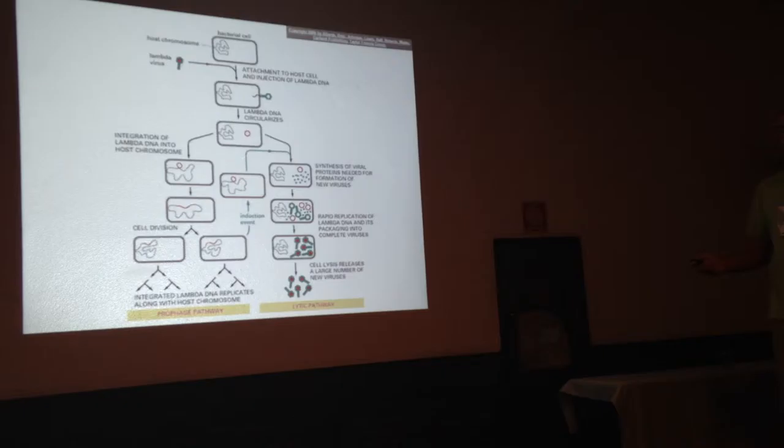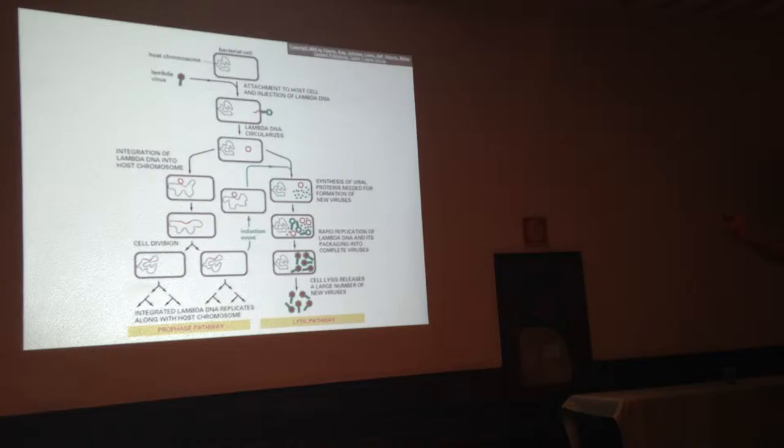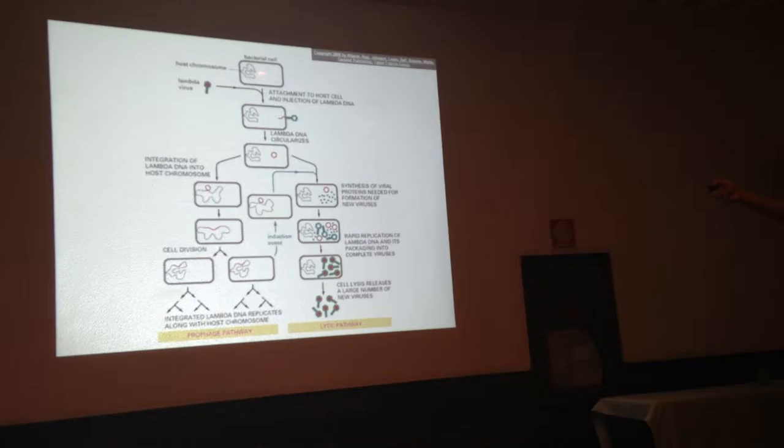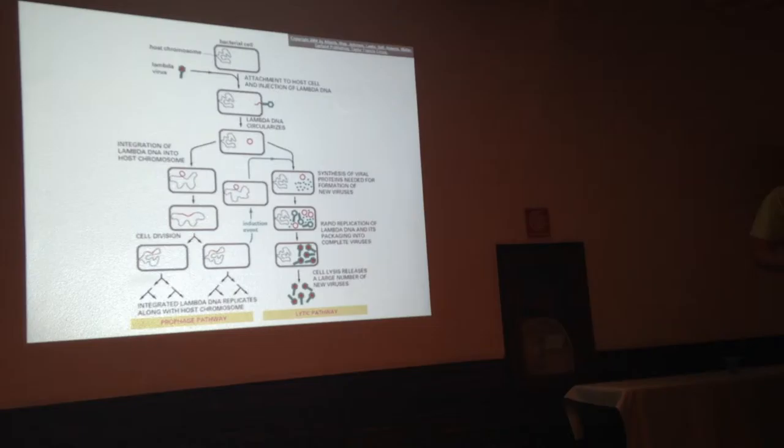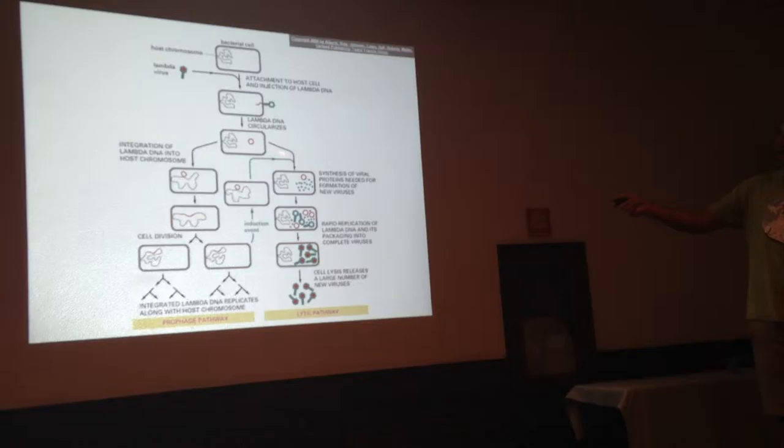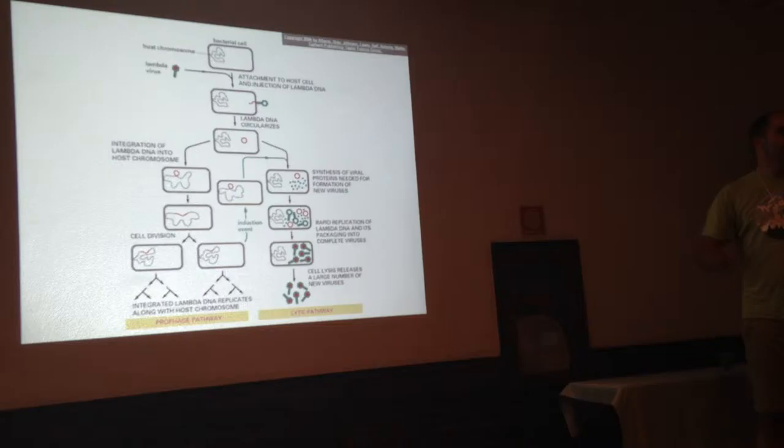For those of you not totally familiar with the life cycle of these organisms, they generally infect a bacterial cell by attaching to the capsid. They inject their DNA to the capsid. And in the case of the organism I'm talking about today, bacteriophage lambda, it can either take one or two developmental paths. In one path, the DNA can integrate itself into the genome of the E. coli host, and then it will replicate alongside that host.